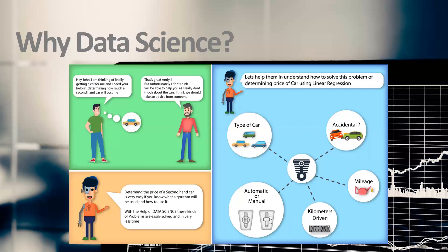Another example: suppose I want to predict a policy price on PolicyBazaar.com or similar websites. You go in, put in your details — your age, whether you have any disease — and it gives you a premium amount. That is a prediction they are doing based on the data they have. That is one more use case in data science.